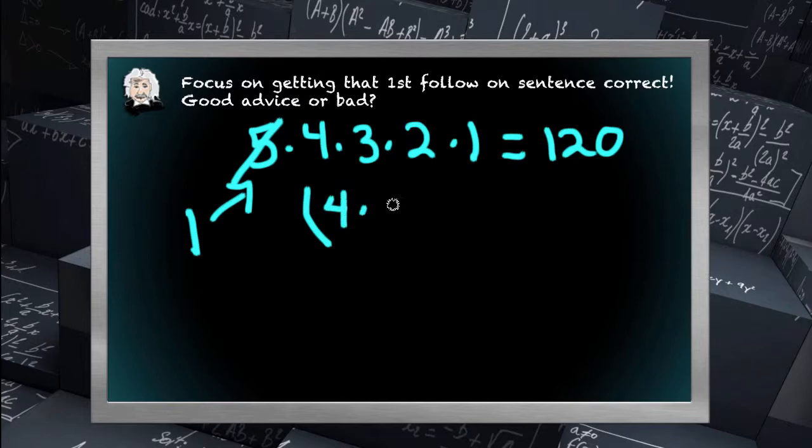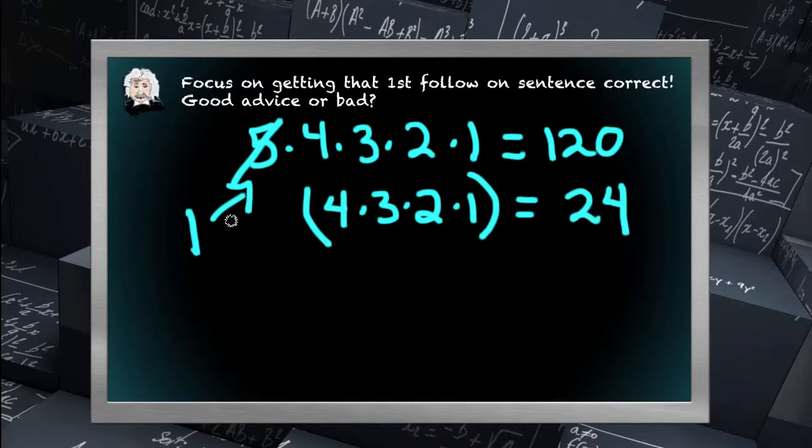And my odds then become four choices for my first sentence, essentially my first sentence, which is really the second. Three choices for the next, two choices, and then finally one choice for my fourth sentence. Four times three is 12, times two is 24. So essentially, if I focus on getting that first follow-on sentence correct, and can do it well, I can reduce my number of answer choices from 120 down to 24.